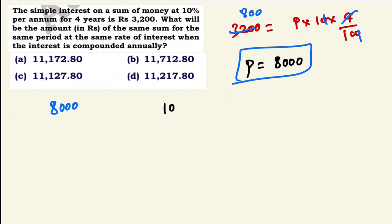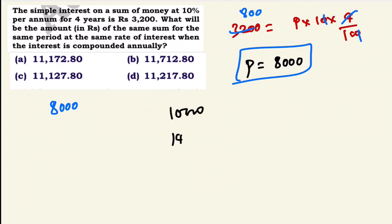Using ratio method: 10 to 11 per year, so 10 to the power 4 is to 11 to the power 4. That is 10,000 to 14,641.